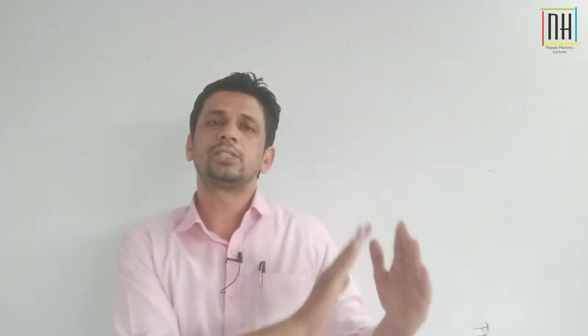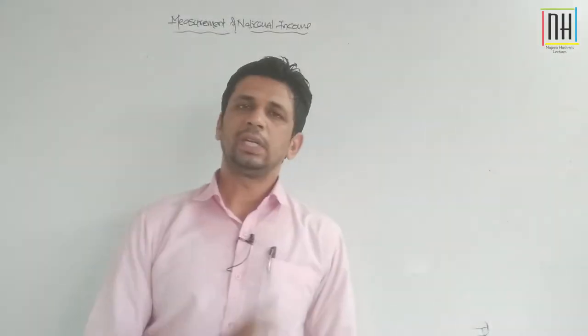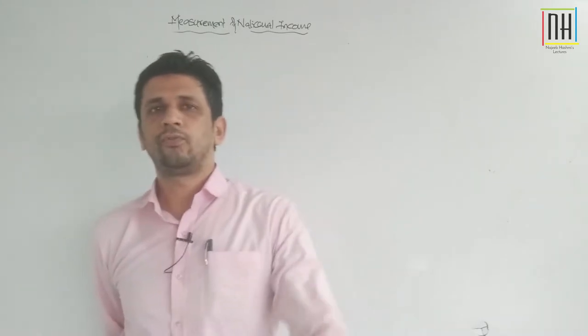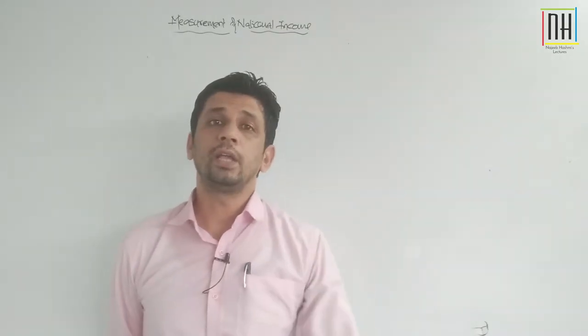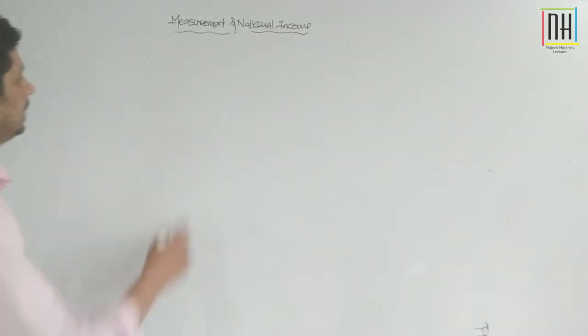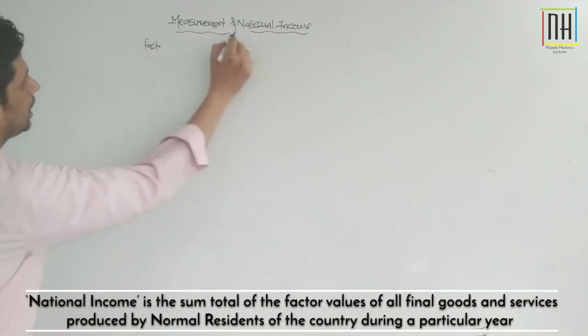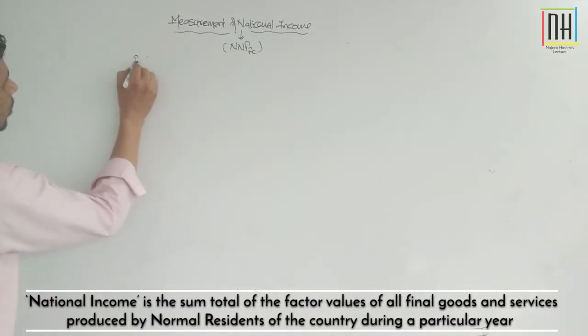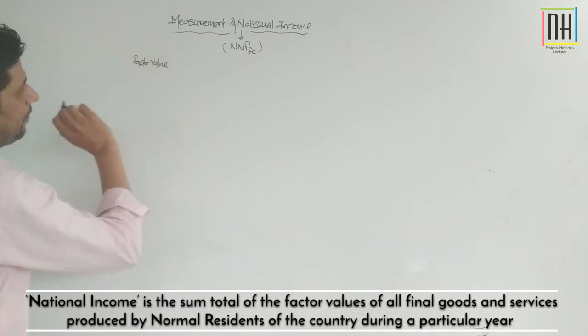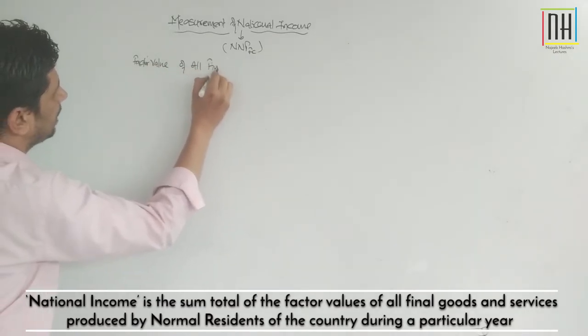In this lecture we will discuss an overview of all the different methods of calculation of national income — how many methods there are and how reconciliation happens among them. Before discussing the different methods, first we will discuss the meaning of national income. National income is represented by NNP at FC, that is Net National Product at factor cost.